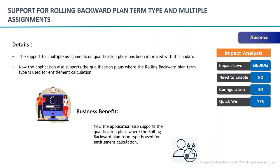Another quick win is support for rolling backward plan terms with multiple absences. Oracle continuously improves its multiple absence and assignment solution. This enhancement extends support for rolling backward plan terms for multiple assignment cases — especially for sickness and similar scenarios. If you have multiple assignment cases and want rolling backward plans, you can now use this seamlessly.